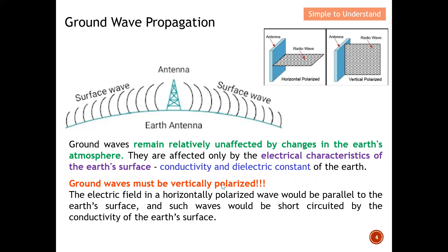Ground wave must be vertically polarized. In a horizontally polarized wave, the electric field is parallel to the earth's surface, and such a wave will be short-circuited by the conductivity of the surface. With vertical polarization, the exposed surface area is much smaller, which encourages propagation along the surface wave. Hence, ground wave must be vertically polarized.